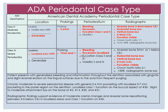In general, the patient presents with generalized bleeding and inflammation throughout the dentition associated with gingivitis and slight enamel erosion on the lingual surfaces due to acid from frequent purging. Chronic moderate to severe periodontitis with general 2 to 4 millimeter pocketing and localized 5 to 7 millimeter pocketing in the posterior region. Localized class 1 furcation on the buccal aspect of number 30. Slight to moderate attachment loss on the facial of numbers 2, 14, 30, and 31. Radiographic findings support evidence of moderate crestal changes in the alveolar bone, repositioning between 3 to 5 millimeters below the CEJ in localized areas, and a class 1 furcation on number 30.